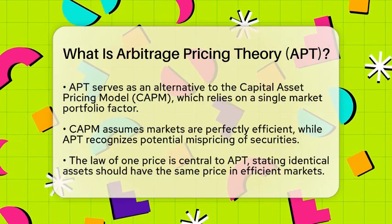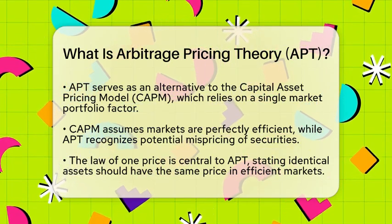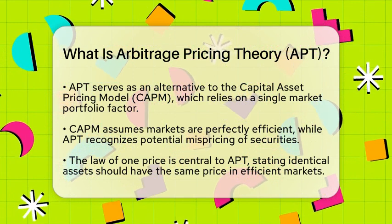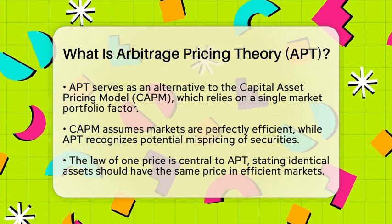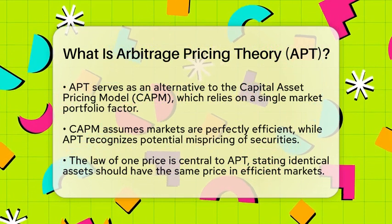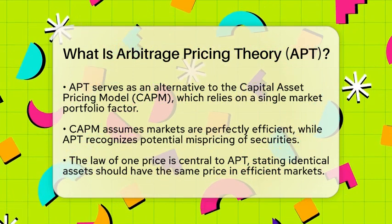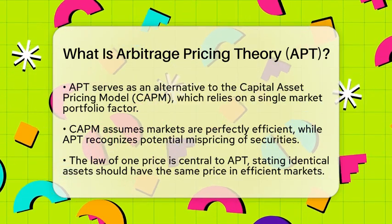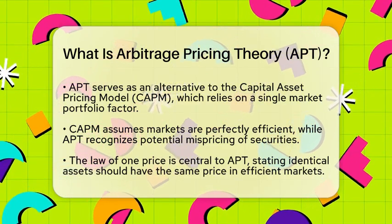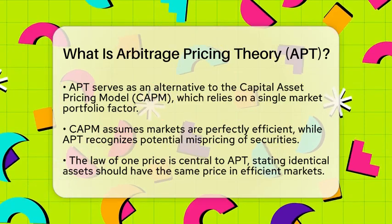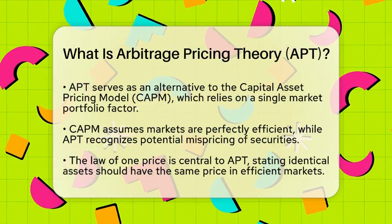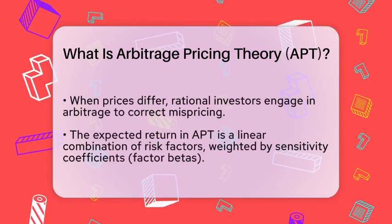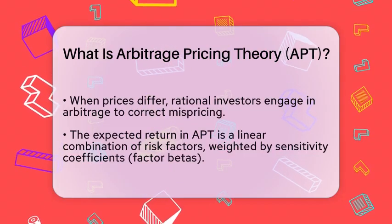When mispricing happens, it creates opportunities for arbitrage. Investors can take advantage of these price differences until the market corrects itself and prices return to their fair value. At the heart of APT is the law of one price, which states that identical assets should sell for the same price in efficient markets. This arbitrage activity helps push prices back to their equilibrium level.